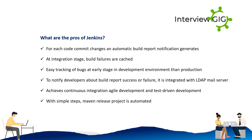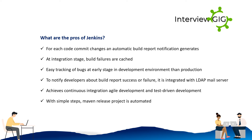What are the pros of Jenkins? For each code commit, an automatic build report notification is generated at the integration stage. Build failures are cached and there is easy tracking of bugs at an early stage in the development environment rather than in production. To notify developers about build report success or failure, Jenkins is integrated with LDAP mail server. It achieves continuous integration, agile development, and test-driven development.